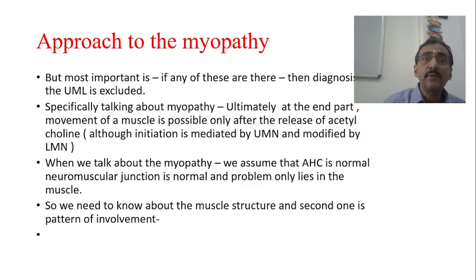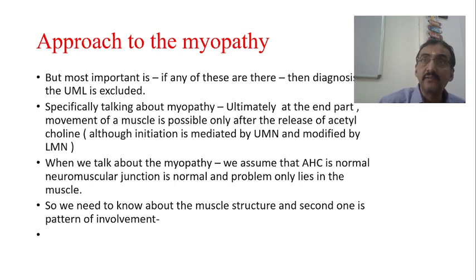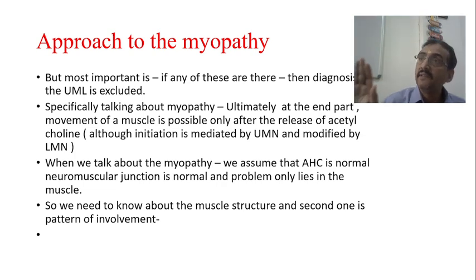Most importantly, if any of these three are present — fasciculation, atrophy, and tendon reflex diminution — that is always suggestive of a lower motor neuron lesion. First you have to identify it is at the LMN level, then identify at which anatomical site. But in gross, if all three are present, you can say this is an LMN lesion and definitely not an upper motor neuron lesion.